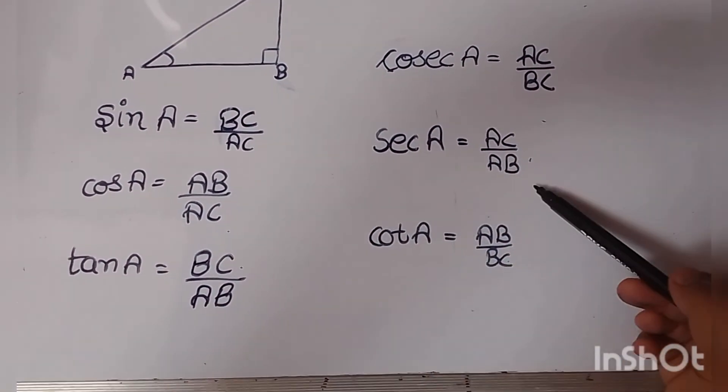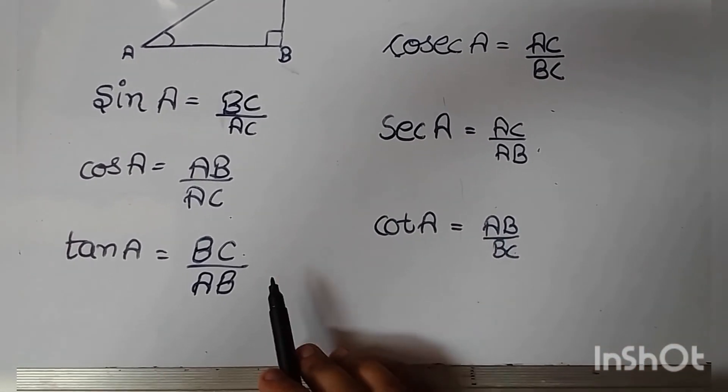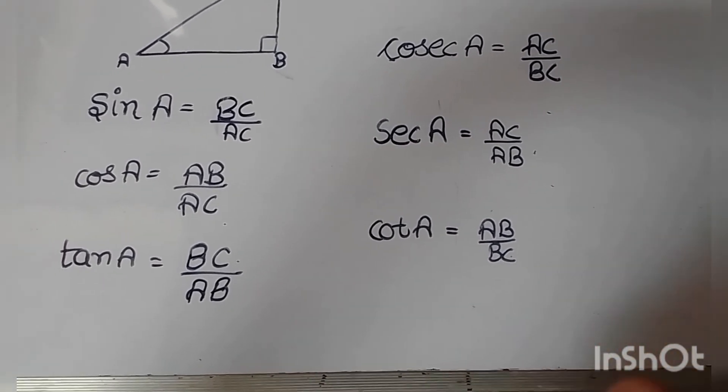Tan is reciprocal of cot, or we can say cot is reciprocal of tan, that is AB upon BC.